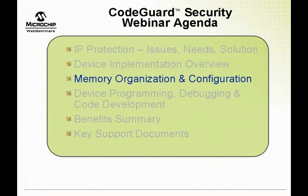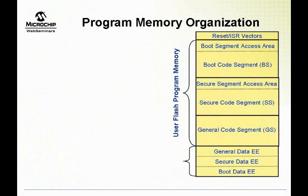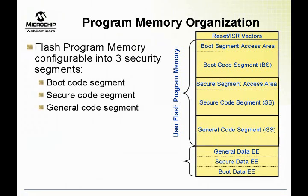Next, we'll discuss how various memory structures like program memory, data memory, configuration registers, and the software stack are organized in devices featuring CodeGuard security. The on-chip program memory in a dsPIC and/or PIC24H device can be organized into three code segments: boot segment, secure segment, and general segment. Each of these three segments has an implied security privilege and an implied system function.